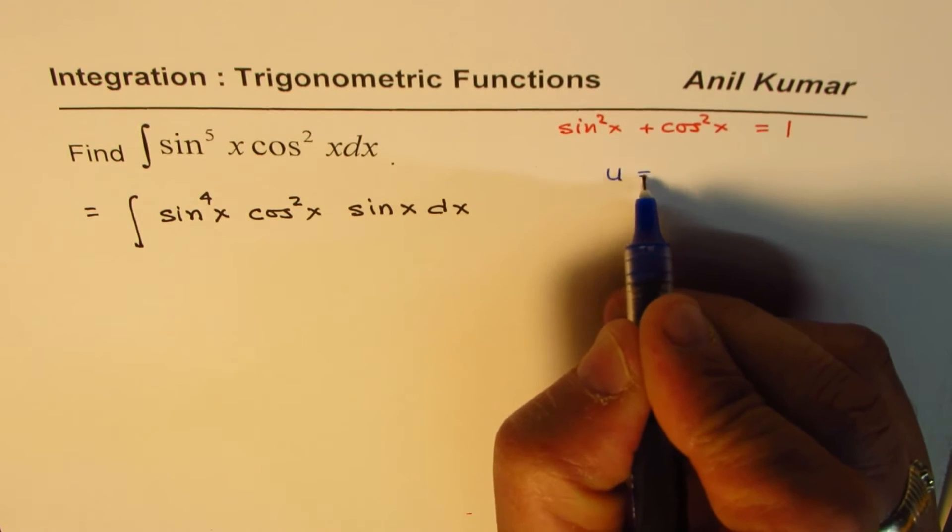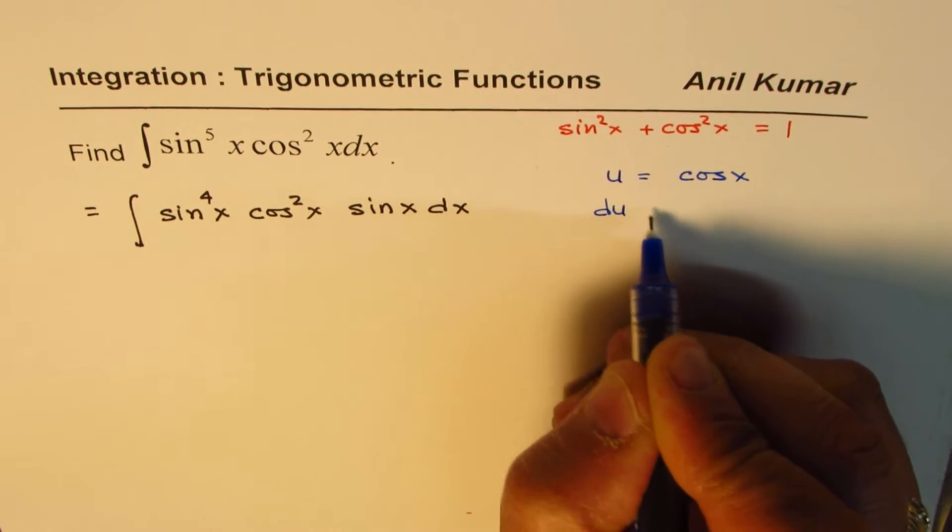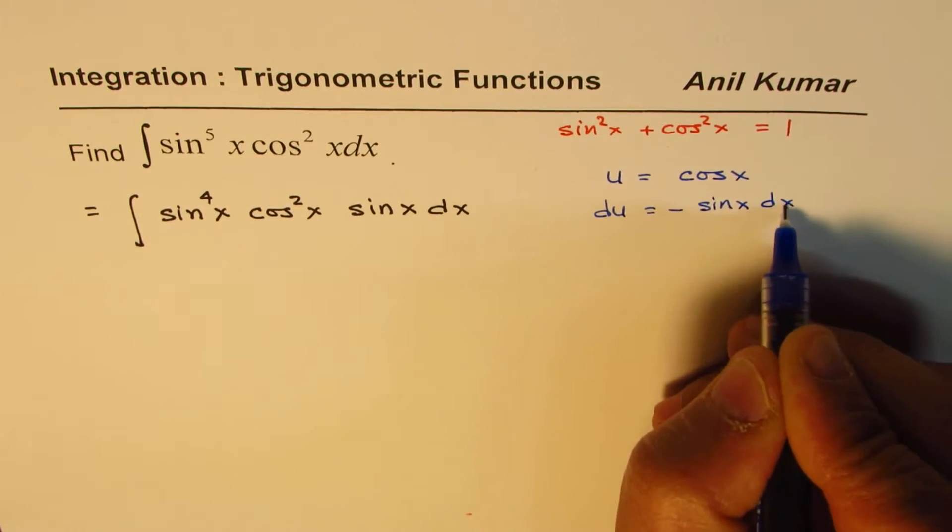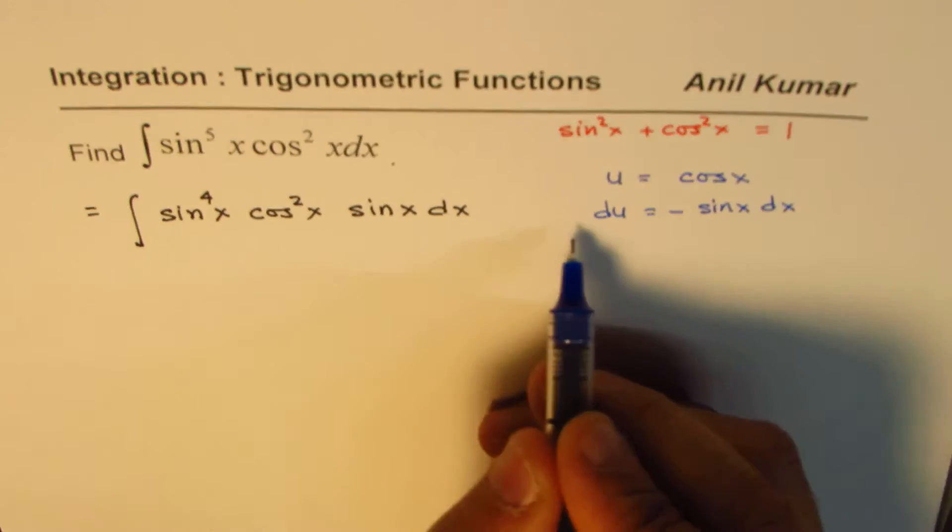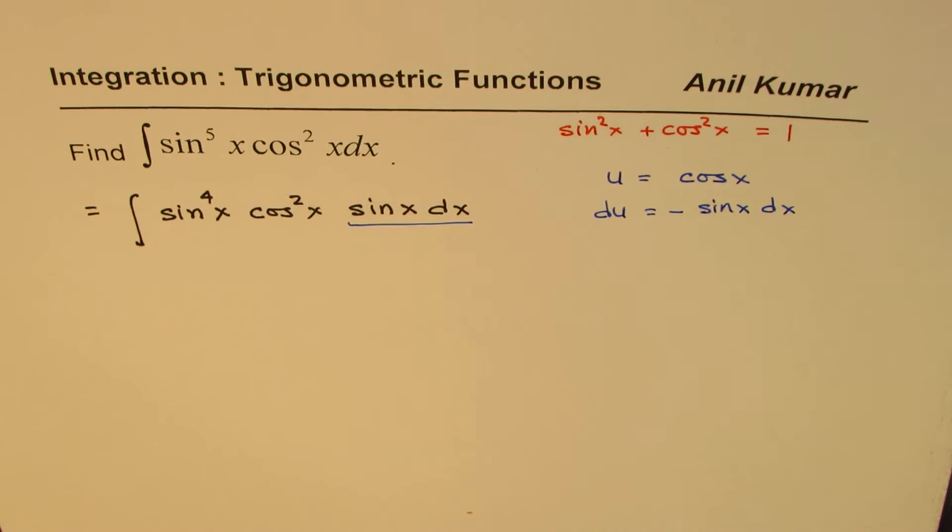You have to say u equals to cos of x, and so du will be minus sine x dx. So sine x dx, this term becomes du with a negative sign in this case.